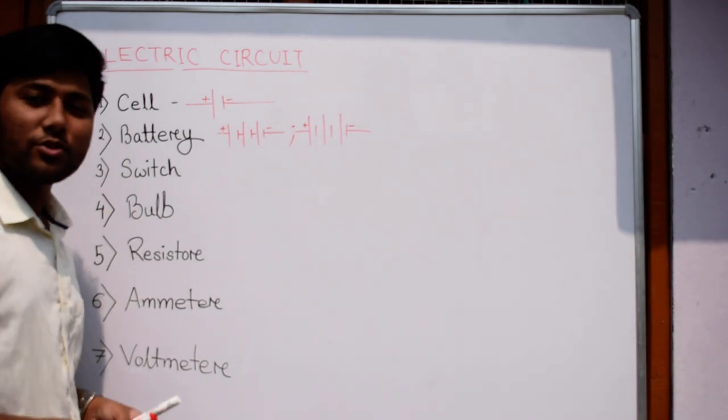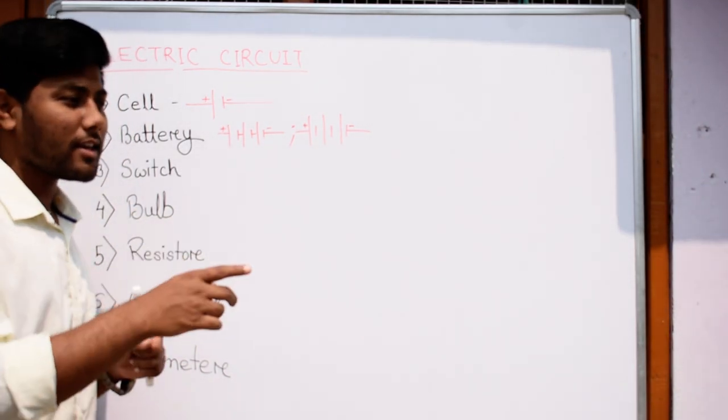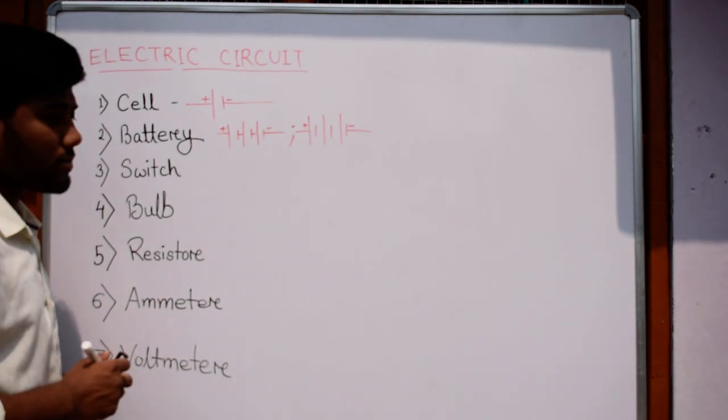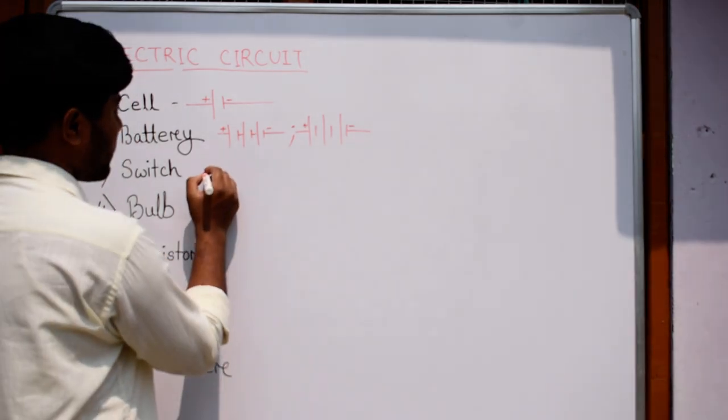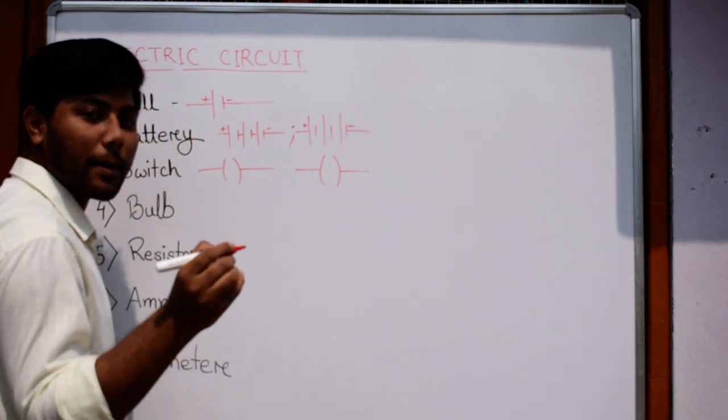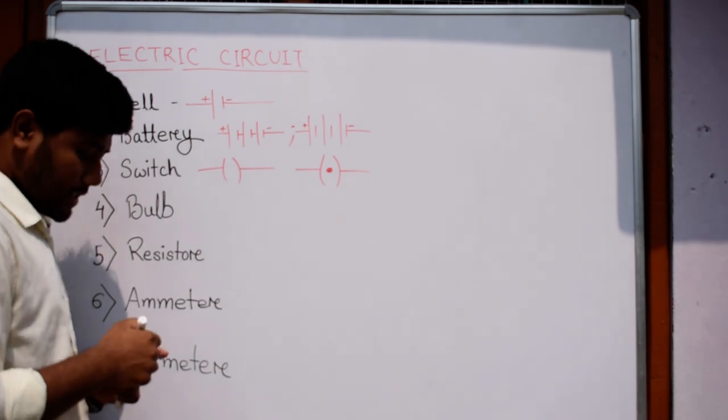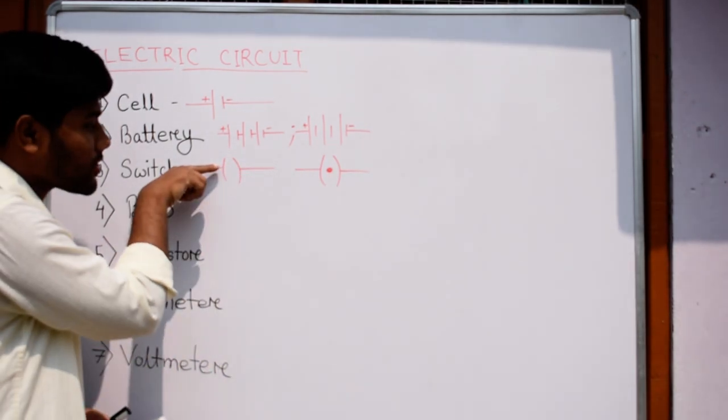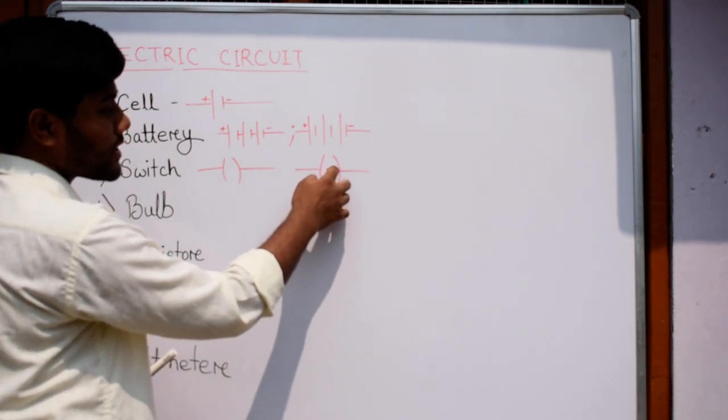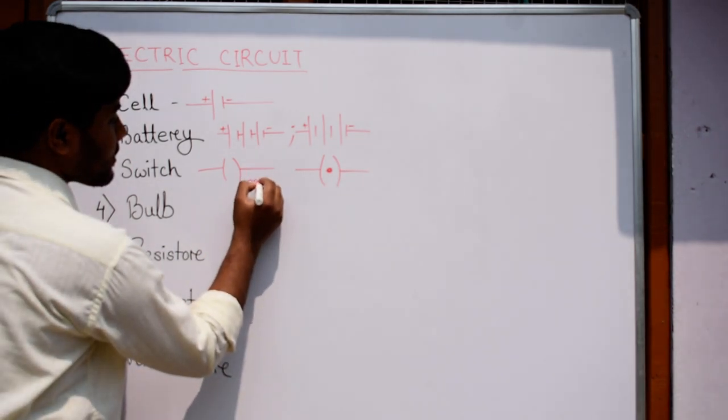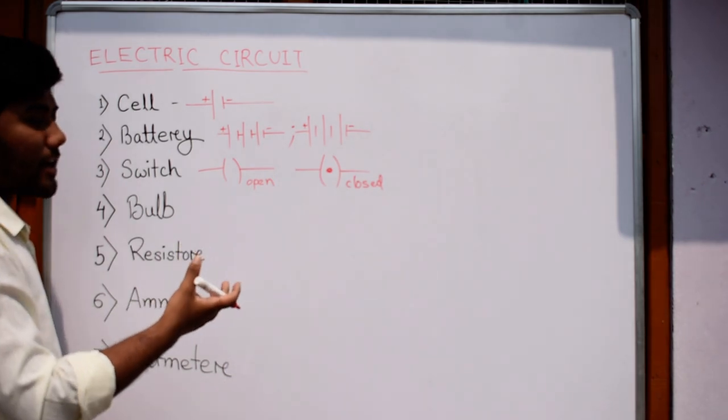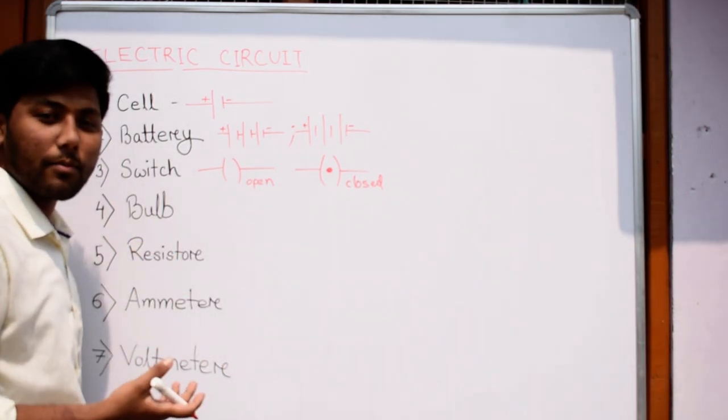The third component is the switch. We all know what is the switch. It connects and disconnects the connection. The switch can be open or closed. When the switch is open, it is denoted in this way. When the switch is closed, then it is denoted in the same way but there is a dot. When the switch is closed, the circuit is complete and current can flow.